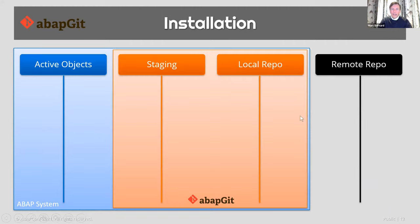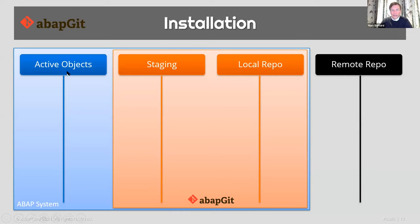We'll use a little demo repository, a very small project I created yesterday for this presentation. When you install ABAPGIT, it basically builds the connection between your active objects — your programs, your classes, tables, everything you do with ABAP development — and the remote repository. In between, it creates a virtual version of a local repository so you see all the files representing your local active objects. There's a staging area that lets you move objects from the active objects over to the local repository and then to the remote side, and it also works in the other direction.